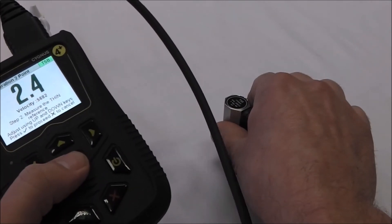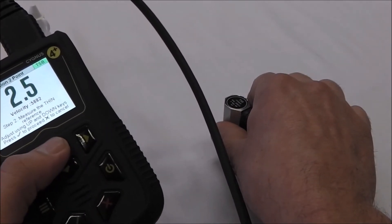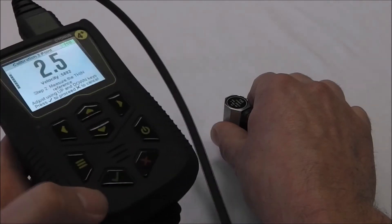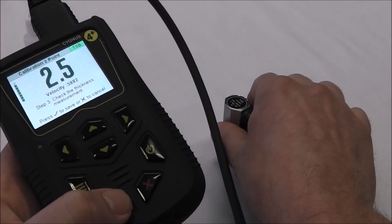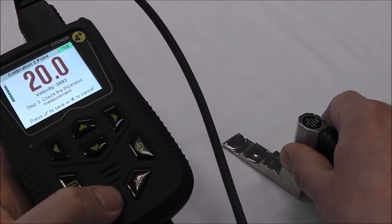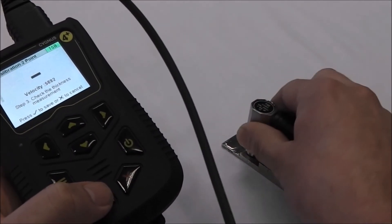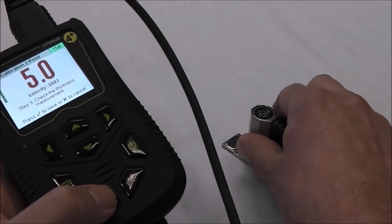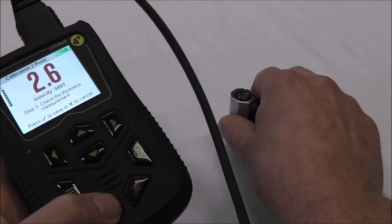Place the probe on the thinner step, use up or down to change the reading to the correct value and the green tick to store. Check the thickness measurement will now appear as the third and final step. Once checked, press the green tick button again.